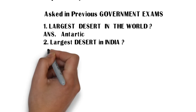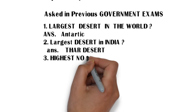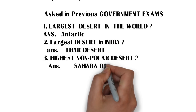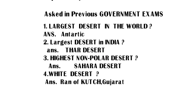The first question: largest desert in the world — the answer is Antarctic Desert. The second one: largest desert in India — the answer is Thar Desert.